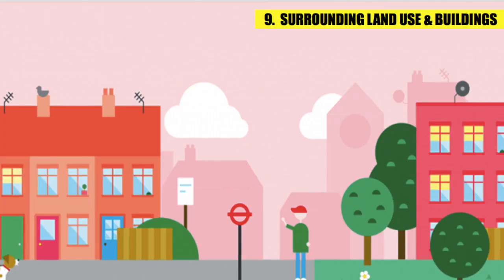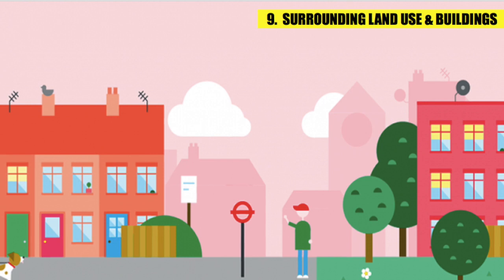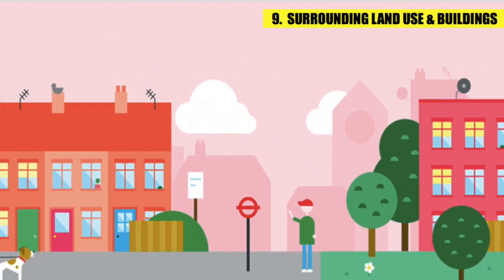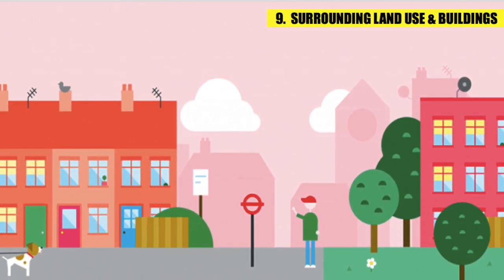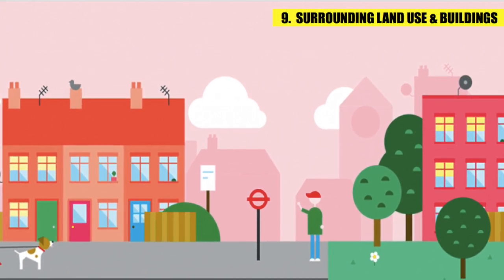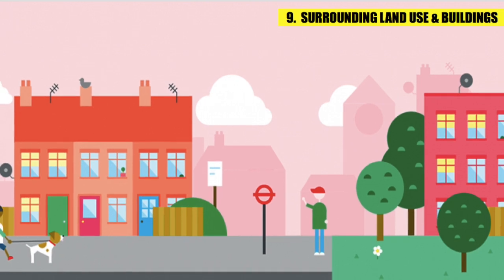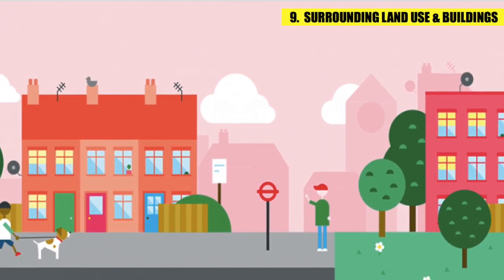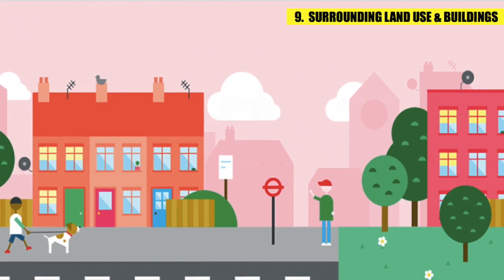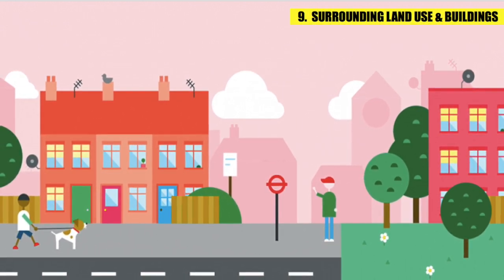9. Surrounding Land Uses and Buildings. One also needs to pay attention to the surrounding land uses and buildings around the site. If the land uses are incompatible, it may lead to creation of issues in the design. Also, the height and setbacks of adjacent buildings are important in affecting the flow of air and also sunlight.